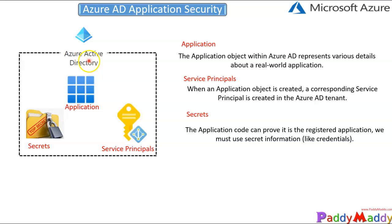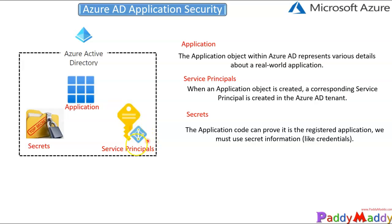Within Azure Active Directory you have an option for registering your applications. When they register with Azure Active Directory, the application in the back end will create something called service principals. These service principals are an identity which is created with your applications automatically. The automated process happens in the back end and will grant access for your Azure resources. This access is restricted by role-based assigned permissions, so you can control what Azure resources can be accessed by these service principals.